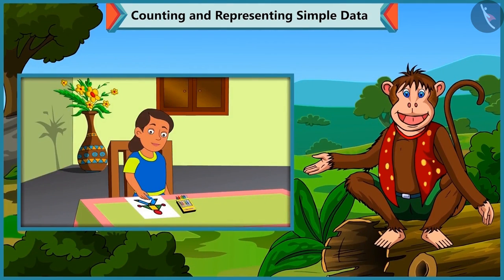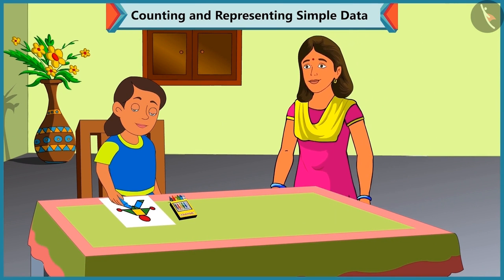We can see that Bubbly is filling colours in the picture with different shapes. While colouring, she is thinking that can she count those different shapes and write their numbers separately? Just as she counted the vegetables and had written their numbers separately. Hey, Bubbly. What are you doing? Look, Mummy. I am colouring this picture. Oh, wow. This picture is looking very beautiful. Bubbly, can you tell me which shapes are present in this picture?